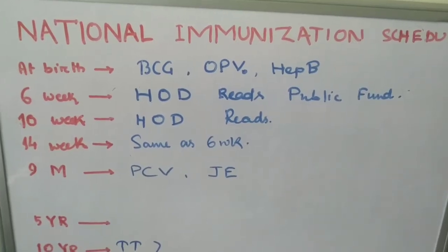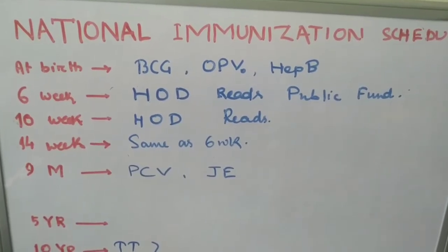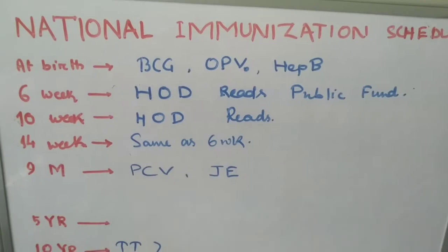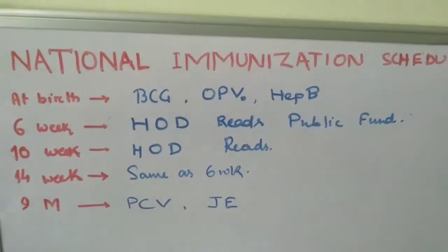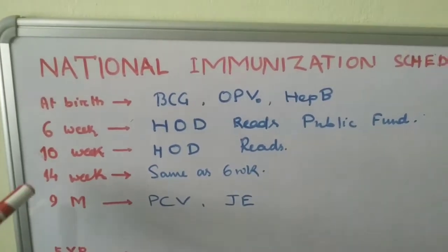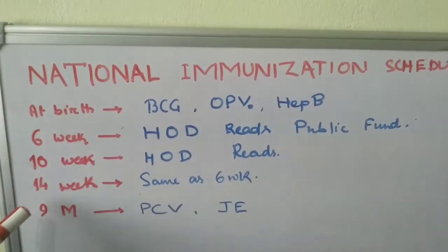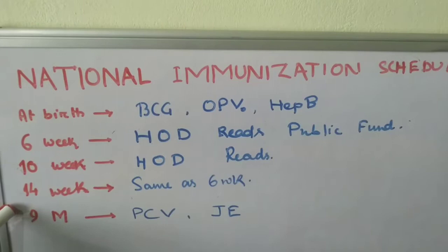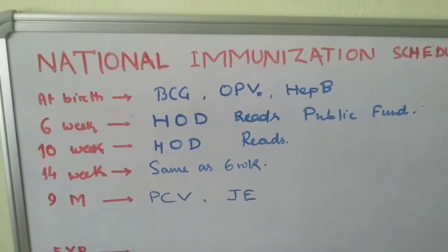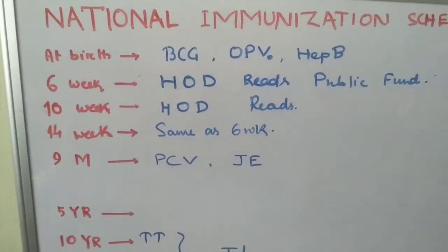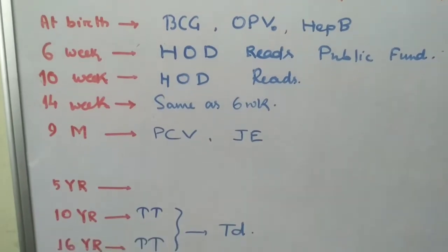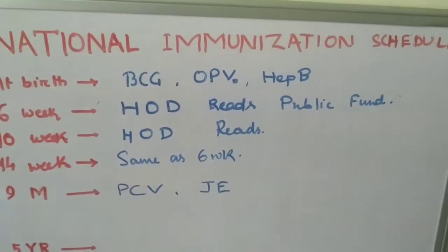Welcome back to the channel. Today we will do National Immunization Schedule. In National Immunization Schedule, I have shown here when the injections are given. At birth, 6 weeks, 10 weeks, 14 weeks, 9 months, 5 years, then 10 years, and then 16 years. Let's see. I will give you some mnemonics to recall and remind it.